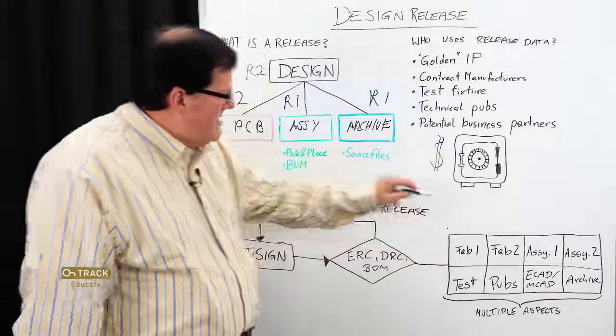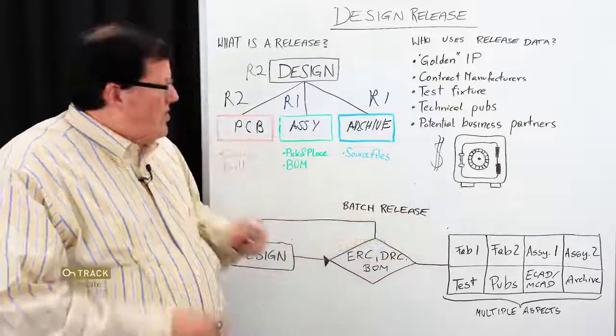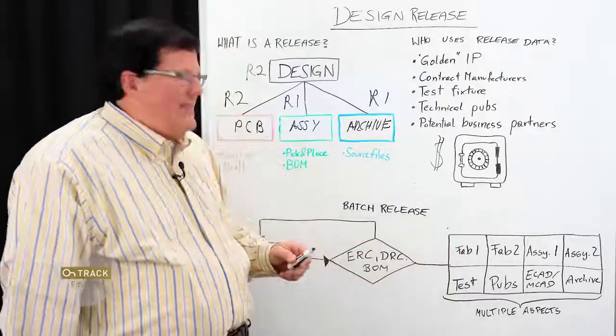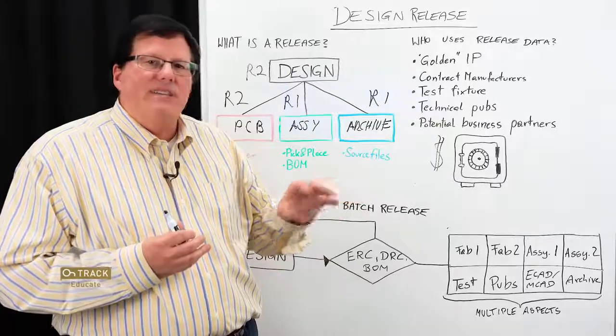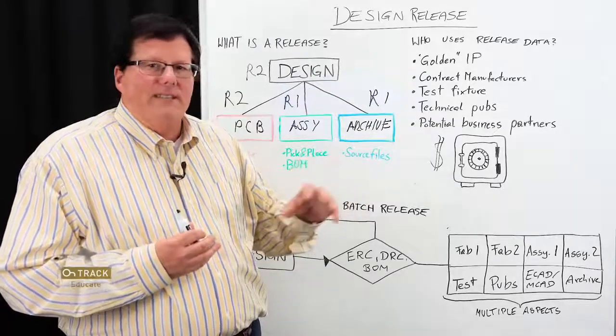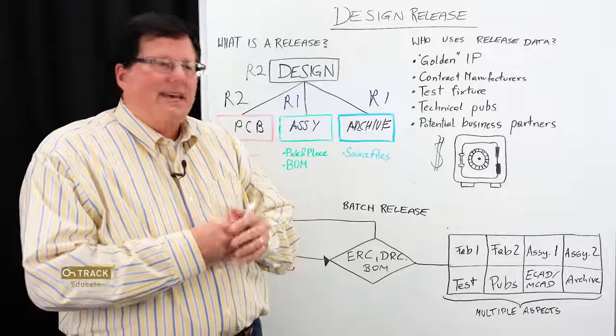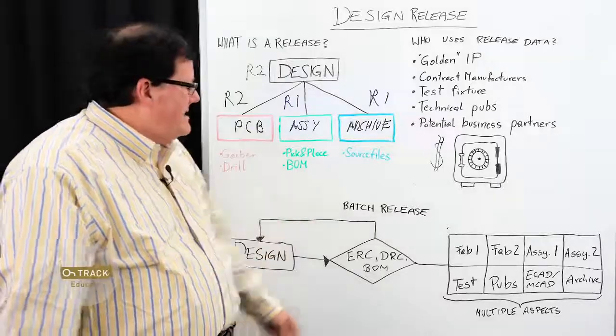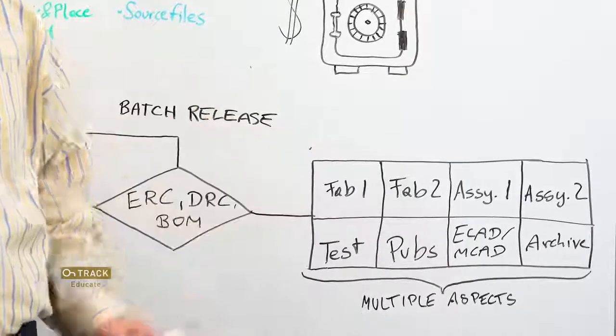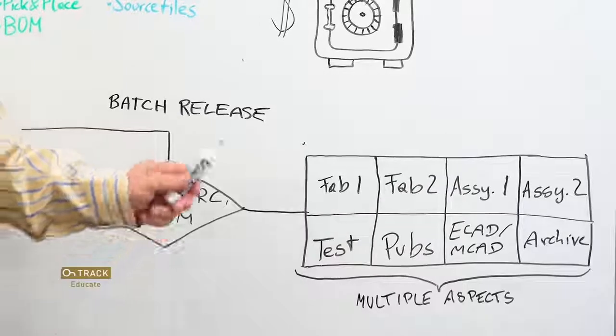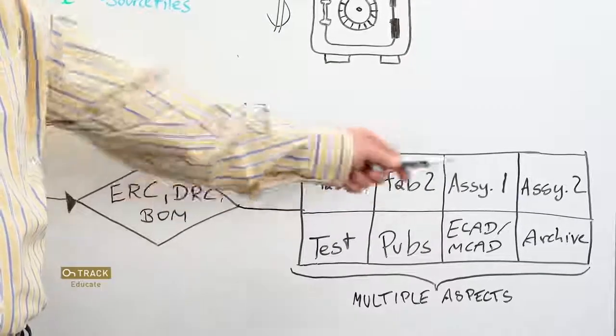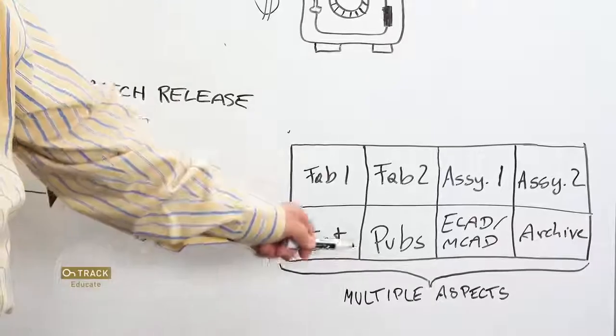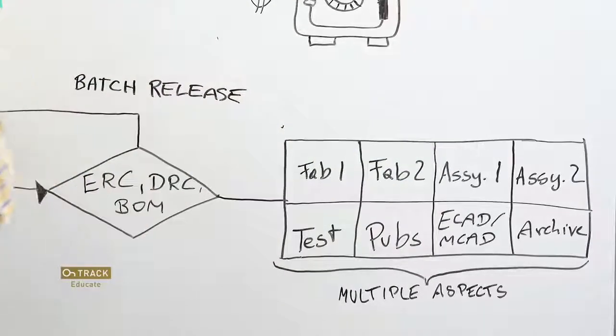Talking about doing something as a one-click batch process, where you define all of the aspects that you want to release to. And then you can simultaneously generate all of these aspects in your release package at once in separate units of data that you could then forward to those entities. So we might have multiple fab vendors, each with slightly different data requirements. And we can define those, you might have the same with assembly, you might have test engineering group, technical pubs, ECAD, MCAD, and of course, archive.